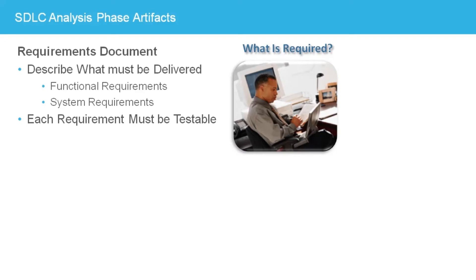A general requirement like 'the system must be user-friendly' relays a desirable feature that cannot be quantitatively measured, so it is not testable and cannot be verified. Testability is important because the approved requirements document is contractual. It is common to trace each requirement through design to at least one test case to ensure all requirements are implemented and validated.